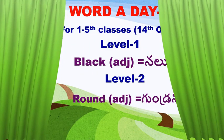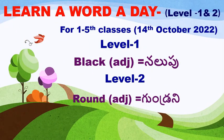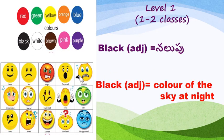Hi children, learn every day — for Level 1 and Level 2, okay, Level 1 and 2 classes. Today's word is: black, B-L-A-C-K, black. Black means color of the sky at night.